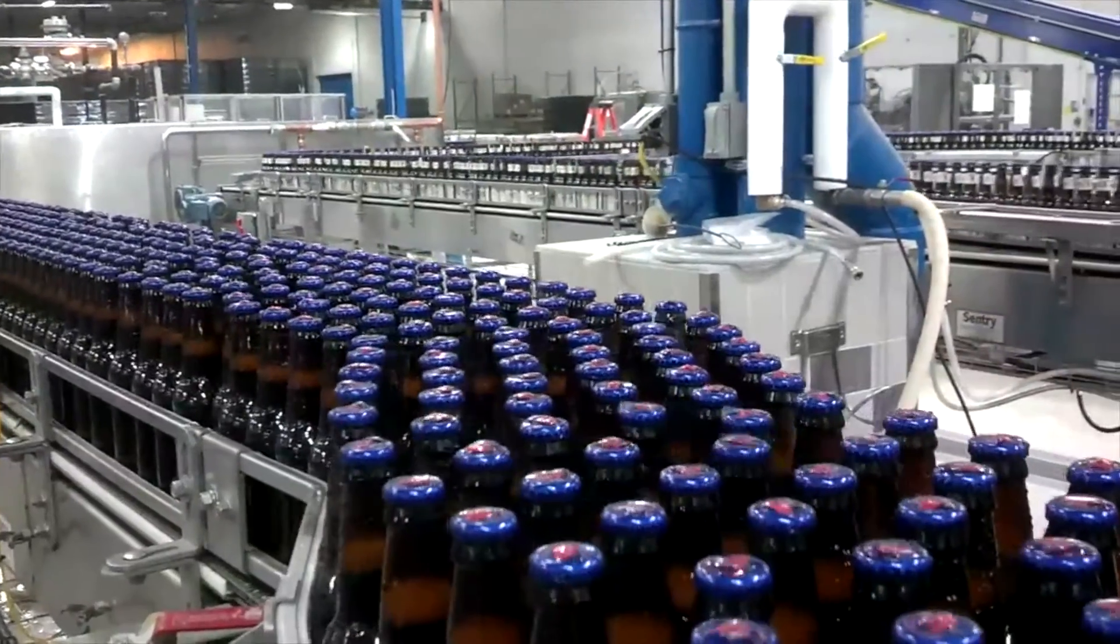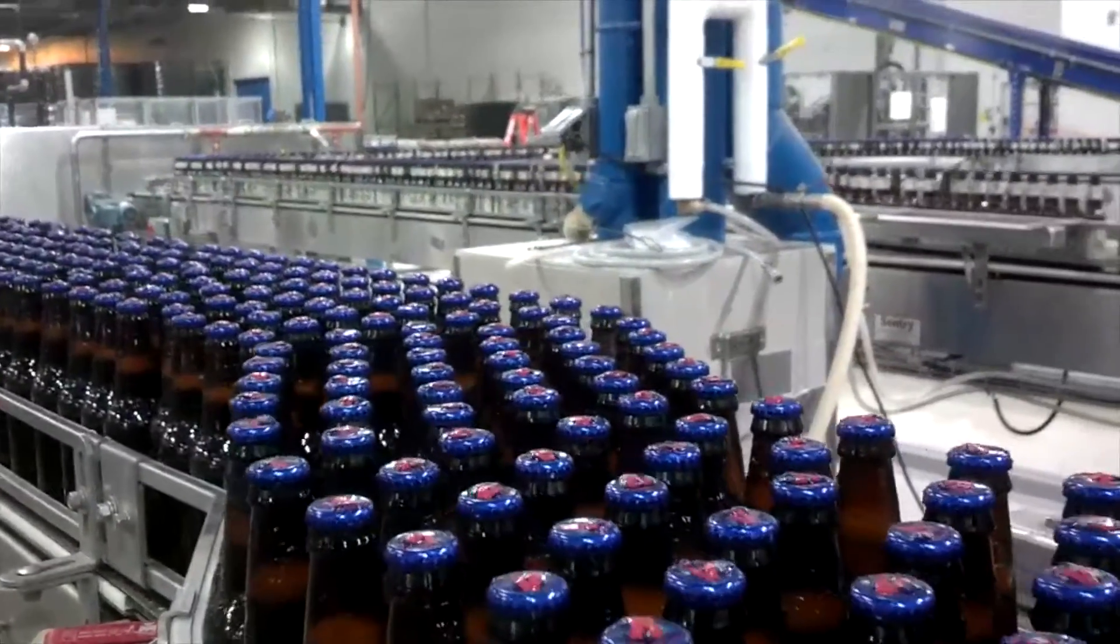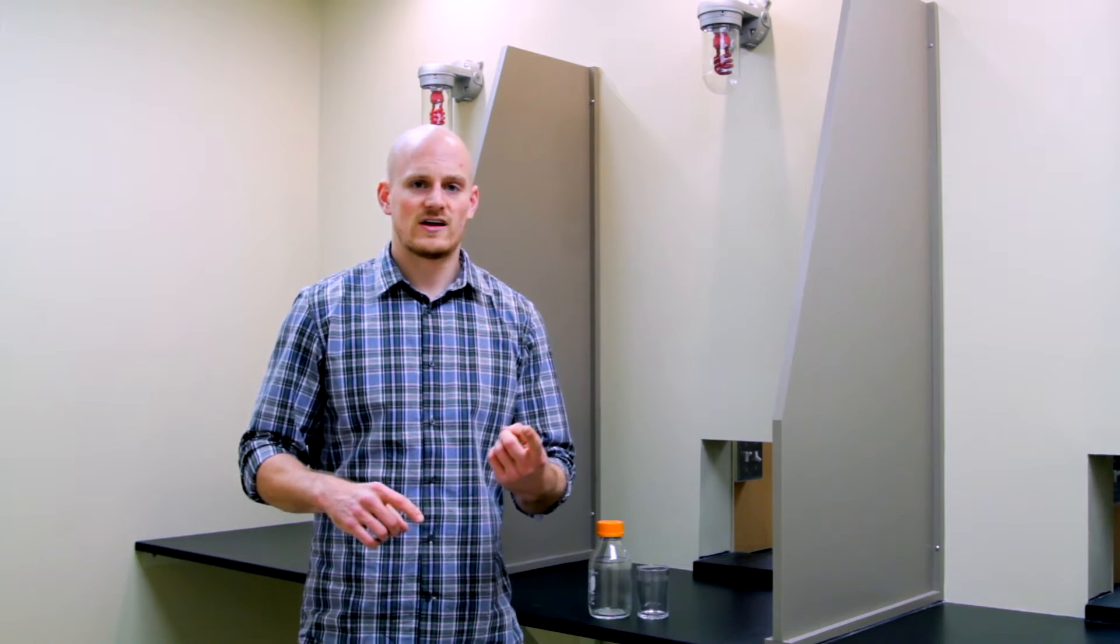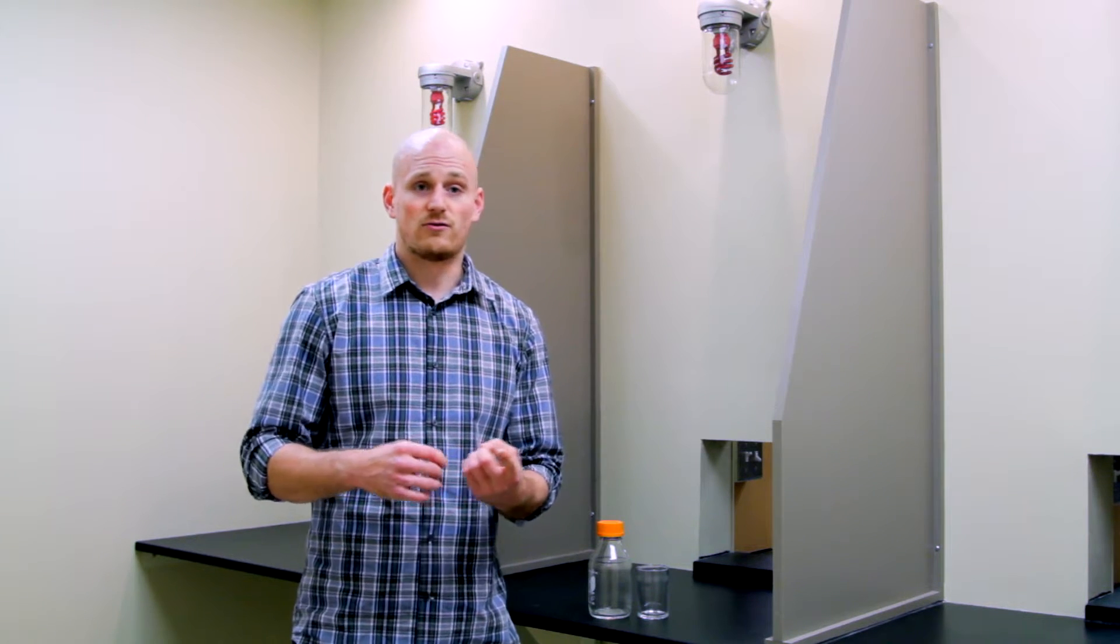When we look at a beer, we're looking at several numerical values that can tell us how it holds up in terms of consistency to other products we have brewed. We're looking at IBUs, International Bittering Units, that is a measured value for bitterness. We're looking at color in the SRM scale, another measured value that we can take to measure consistency.